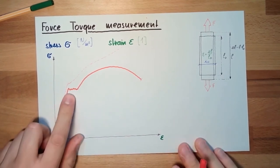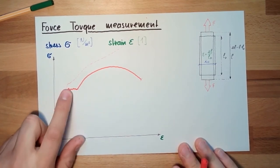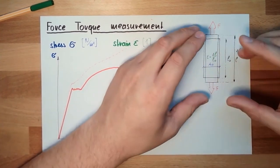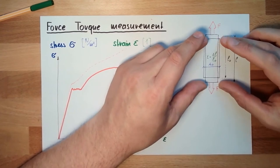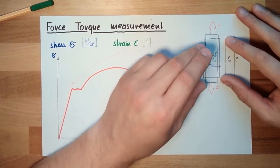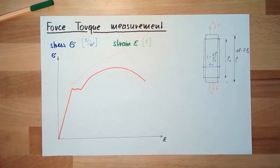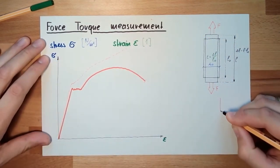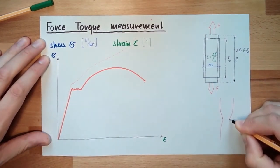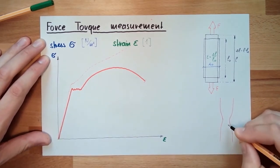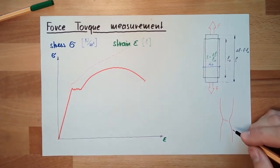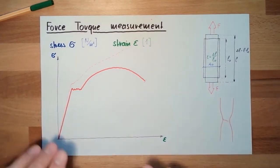What is happening here? At this Fließgrenze, this yield, the material starts to deform permanently. It's not elastic anymore. It will start to deform permanently and at one point it will get really thin. And this is then exactly the point where it will rip apart.